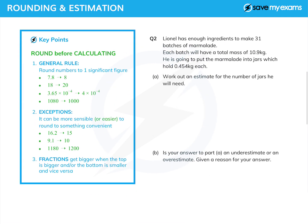There we go, there's a nice simple question. A slightly more complicated question: we've got Lionel making 31 batches of marmalade, and each batch is going to have a total mass of 10.9 kilograms. He's going to put marmalade into jars which hold 0.454 of a kilogram each. You might think that's an odd number, but it's actually one pound in old weights.